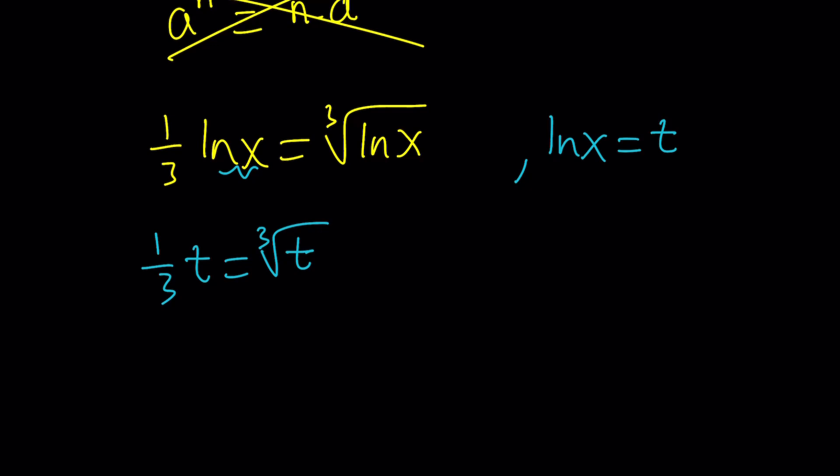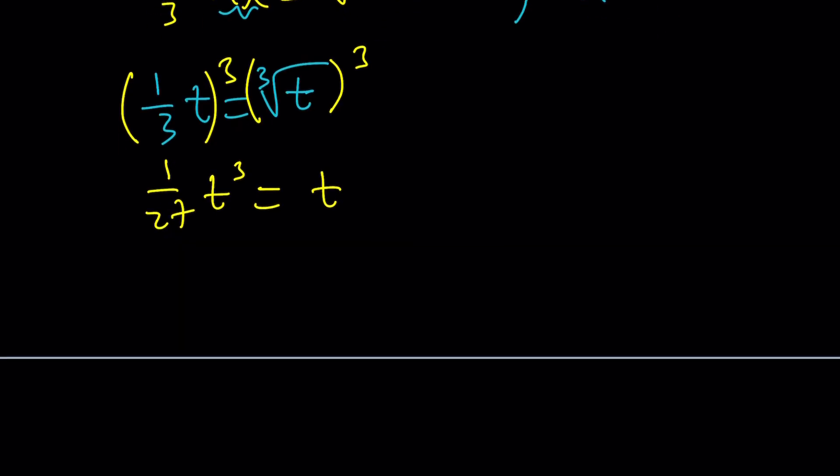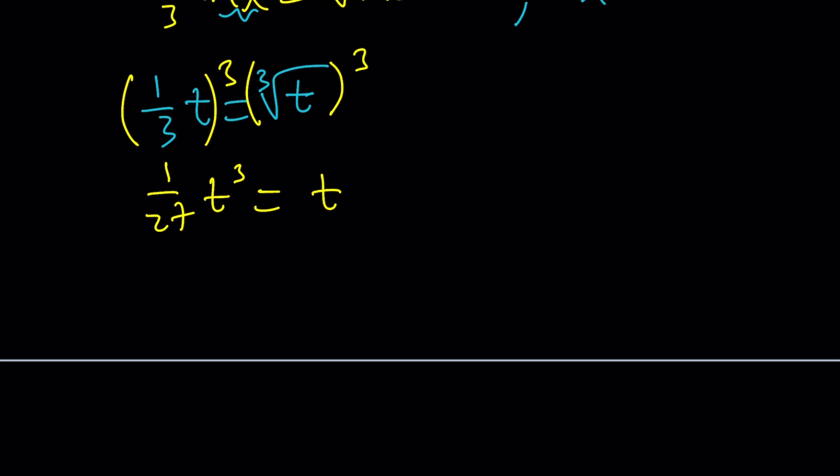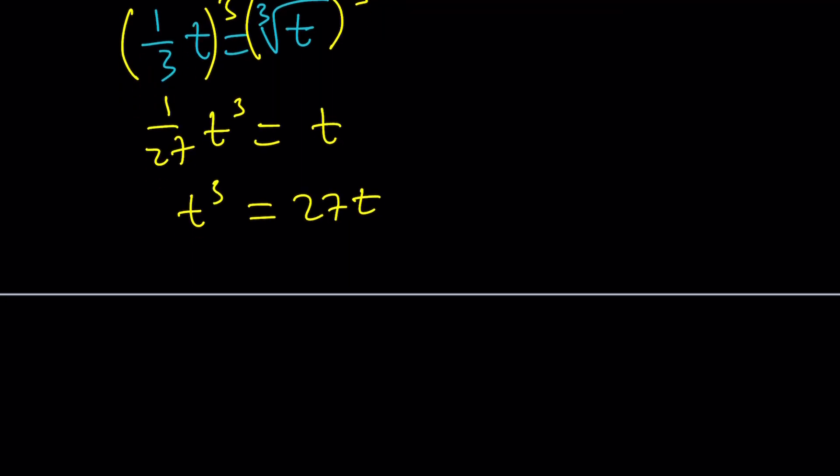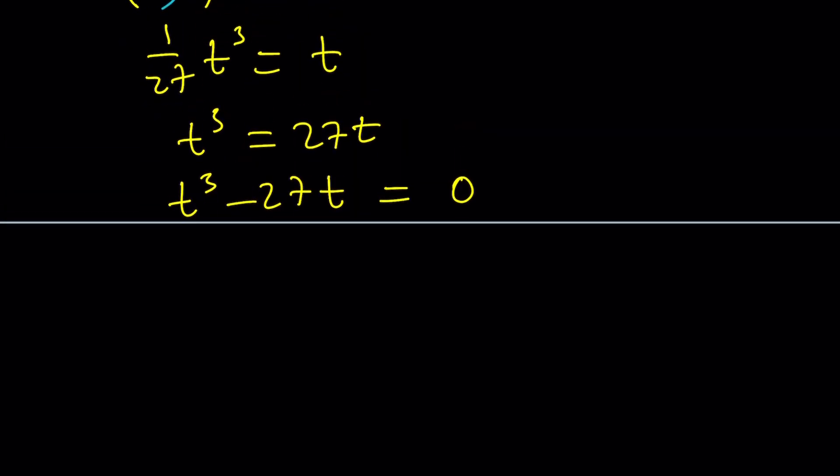So how do you get rid of the cube root? By cubing both sides. Let's go ahead and do it. Cube both sides. You're going to get one over 27 t cubed equals t. And then how do you solve this equation? It's a cubic sort of polynomial, easy to solve. Let's go ahead and multiply both sides by 27 first. Get rid of the fraction. And then don't divide by t. Don't cancel out t. Put everything on the same side. You don't want to do that because that means you could be losing solutions. And now this is the full cubic.